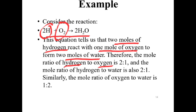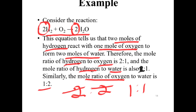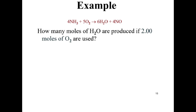The mole ratio of hydrogen to oxygen is two to one. The mole ratio of hydrogen to water is one to one. Similarly, we can determine the mole ratio of oxygen to water. So, how many moles of water are produced if two moles of oxygen are used?